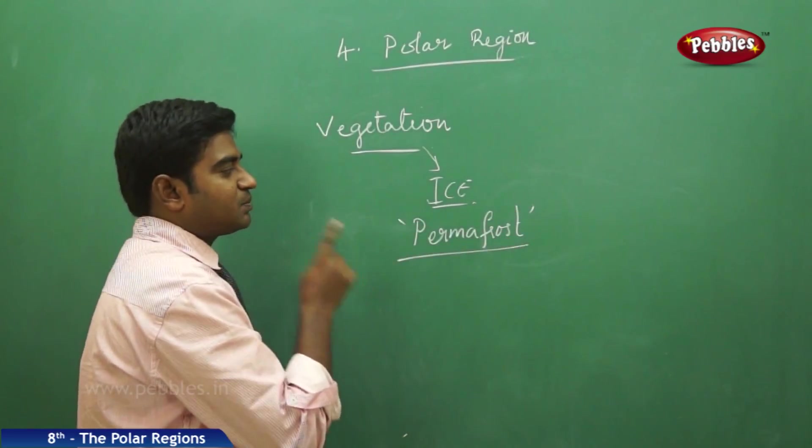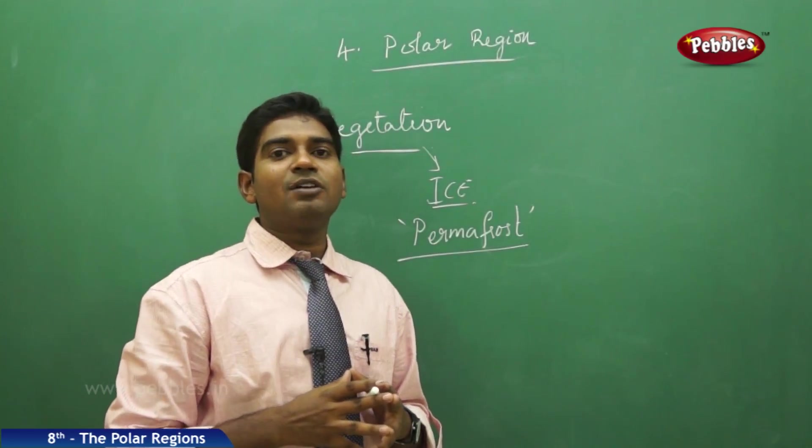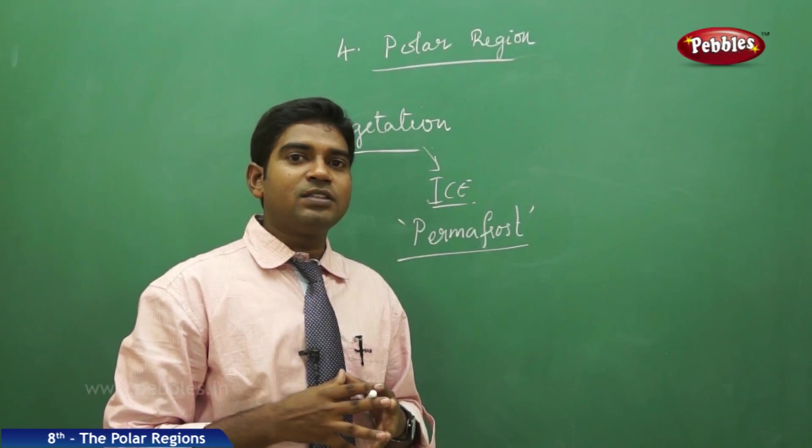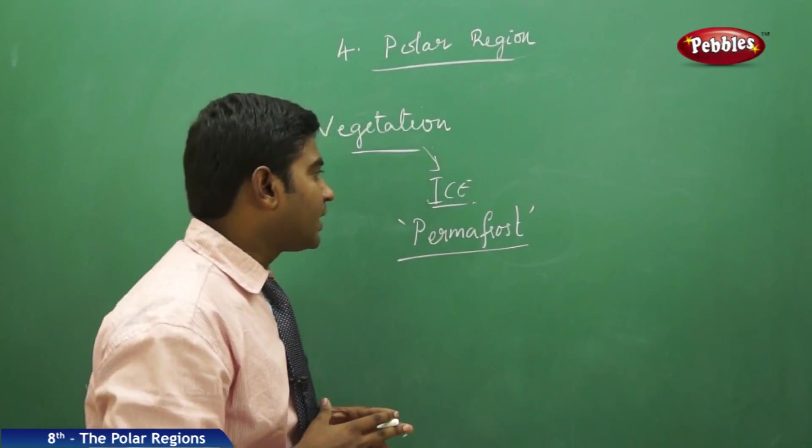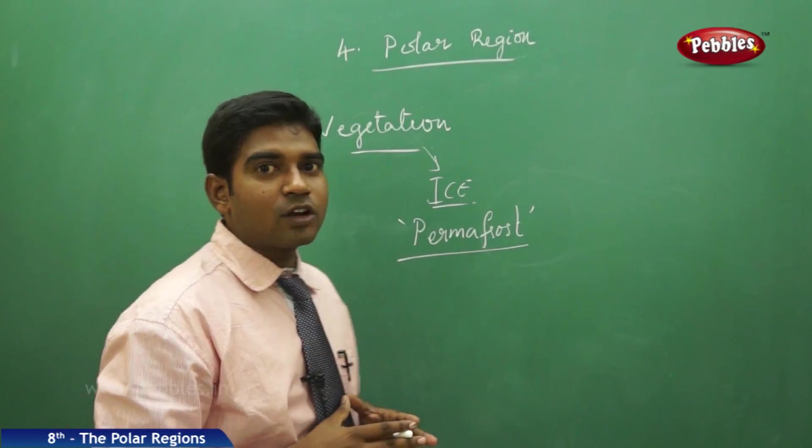The region which is permanently frost region is called permafrost region. And this is the reason why most of the times the crops are, there are no other crops.